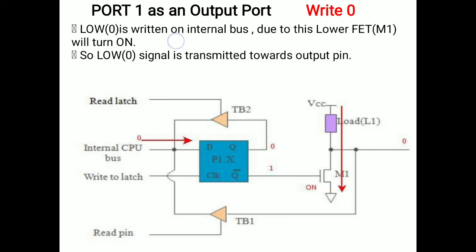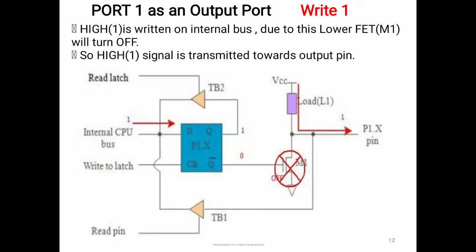In case of output operations, the read buffer (tri-state buffer) is not activated — the read control signal is deactivated. So whatever signal is there will not transfer towards the internal bus. If 0 is there, it is simply delivered at the output port pin, for example P1.0 or P1.1. So 0 will be transferred automatically when the lower FET turns on. This is the condition for writing 0.